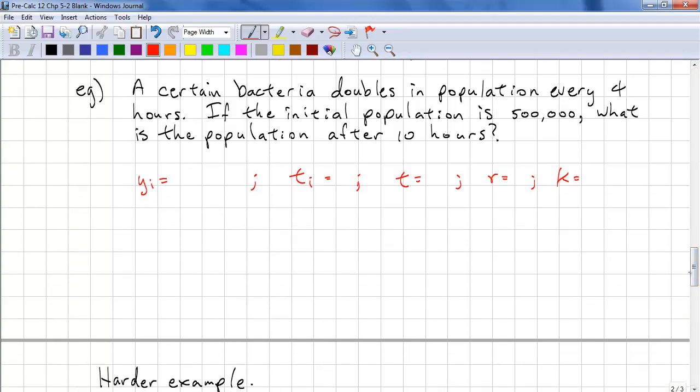Let's look at another problem. A certain bacteria doubles in population every 4 hours. If the initial population is half a million, what is the population after 10 hours? So yi, that's our initial value, is 500,000. Our ti is 0 because we're told that the initial population is 500,000, so we can assume that is at time 0. And we're looking to evaluate this at time 10 hours. Our ratio is double, so that means 2. k is 1 over the amount of time for the ratio to occur. So it doubles in 4 hours, so this is 1 over 4.